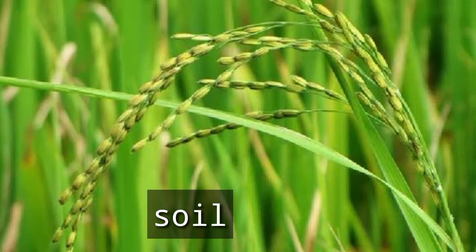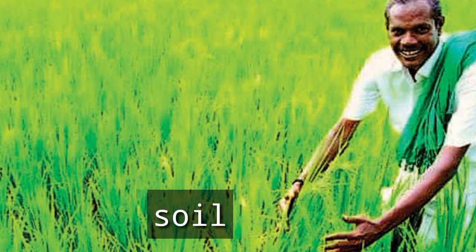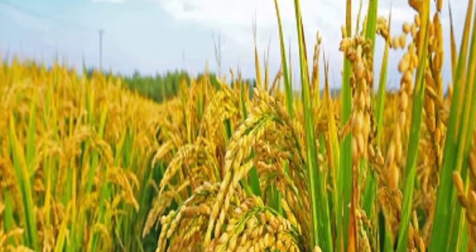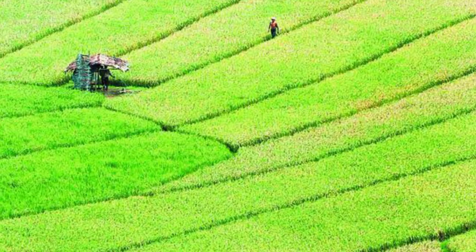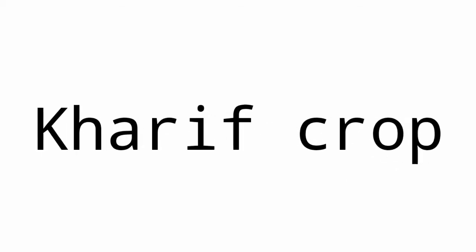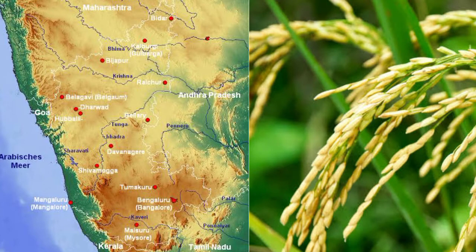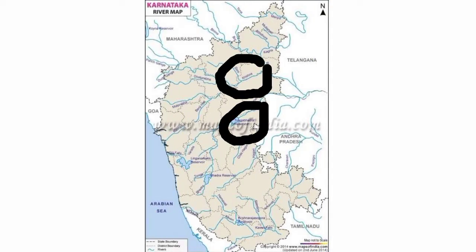Level land with fertile clay soil is ideal for paddy cultivation. Organic manure, leaves of trees, and abundant labor are required. Nearly 70 percent of the paddy is sown during June to August and harvested during November and December — it is a Kharif crop. Where irrigation facilities are available, paddy can also be grown in summer from February to June, which is called the Rabi crop. In the Malnad region, paddy is grown by the broadcasting method and also by the transplanting method.